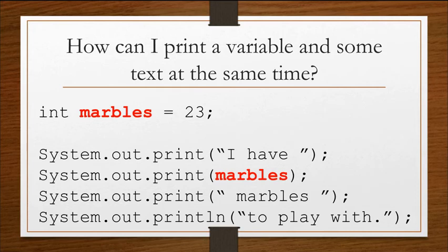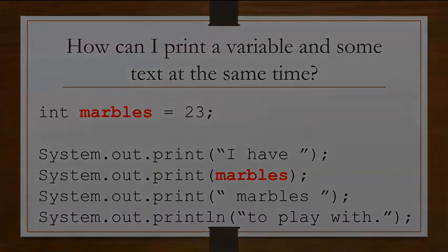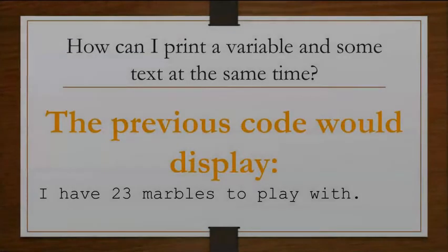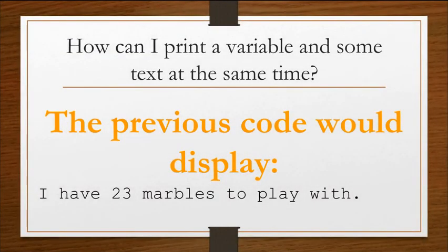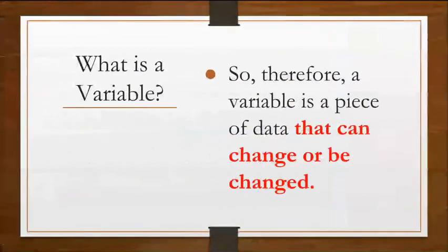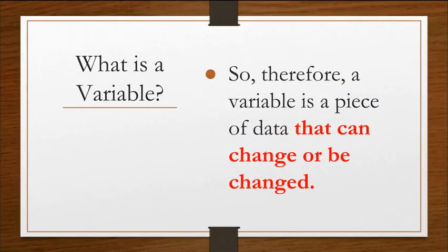On the third print statement, we see marbles is in quotation marks, and that marbles will be treated like a string literal, followed by to play with. So on this slide, we see what would print: I have 23 marbles to play with.